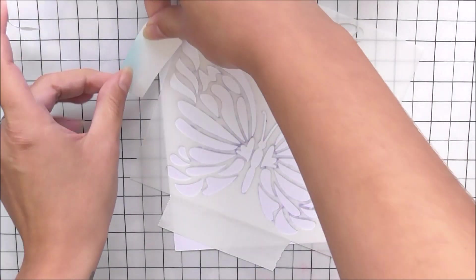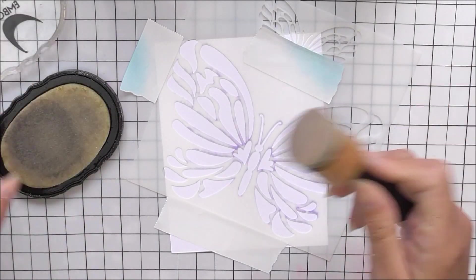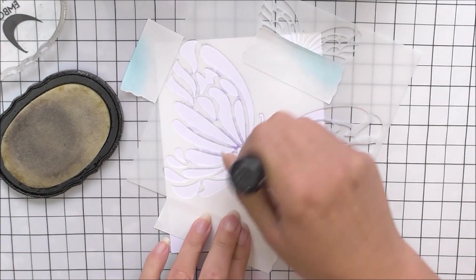I'm then going to take the flowing butterfly stencil and I'm going to tape this into place on my panel. I've also taped off the smaller butterfly in the top part of the stencil.